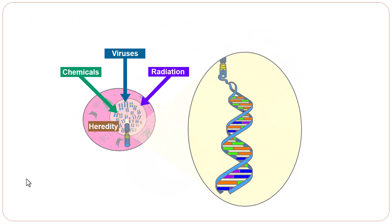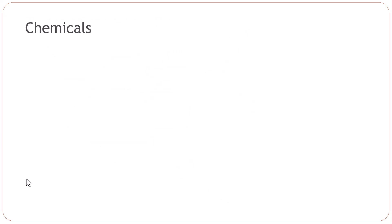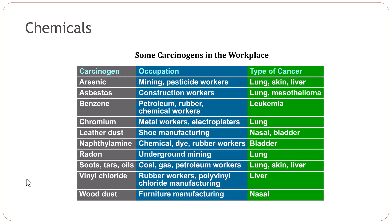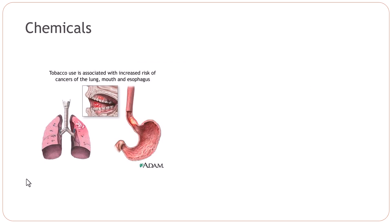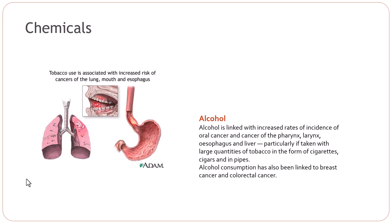Let's look at some chemicals. There are chemicals found in different occupations or workplaces which can cause different types of cancer — for example, arsenic, asbestos, benzene, chromium, and leather dust. Tobacco use is associated with increased risk of cancers of the lung, mouth, and esophagus. Alcohol is linked with increased rates of oral cancer, cancer of the pharynx, larynx, esophagus, and liver. Alcohol consumption has also been linked to breast cancer and colorectal cancer.